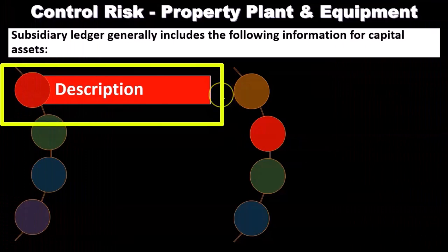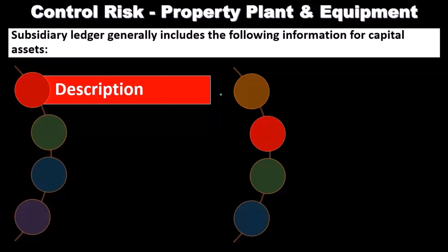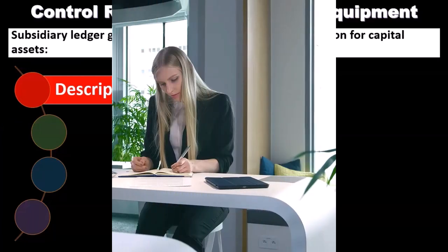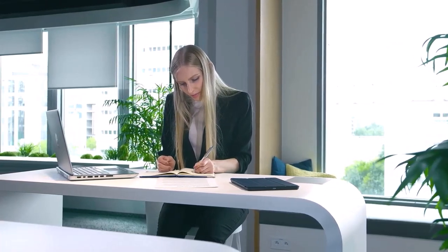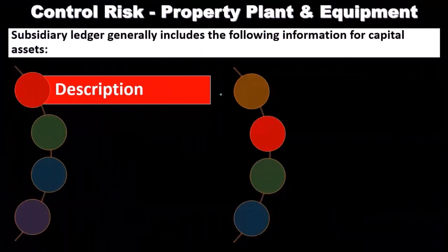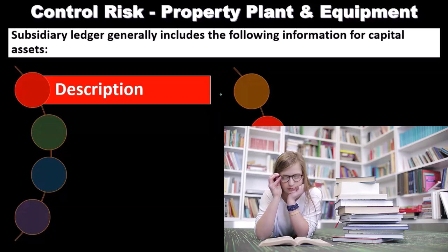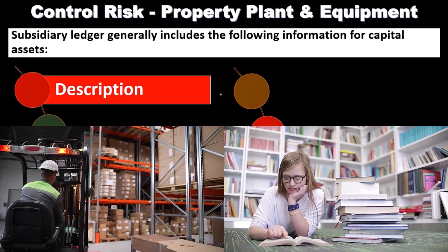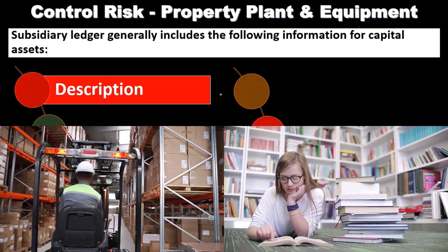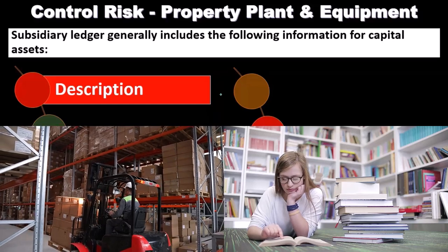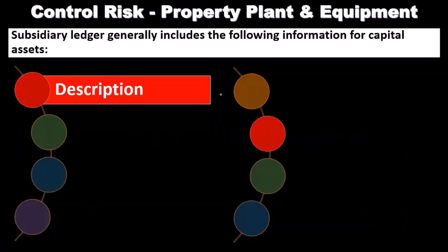The subsidiary ledger should include a description of each piece of property, plant, and equipment — not just a generic label like 'equipment,' but a specific description such as 'CAT forklift' with a serial number. You also should not lump multiple items together. For example, if five forklifts were purchased, each should be recorded separately, because if you sell one forklift, you need to identify it precisely.